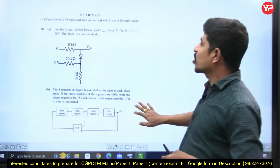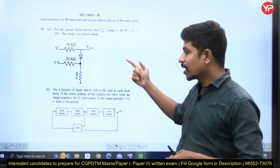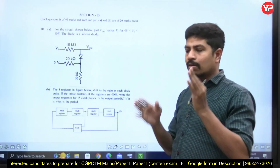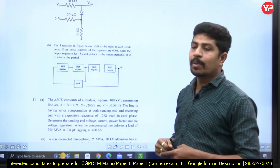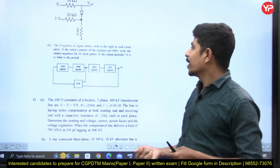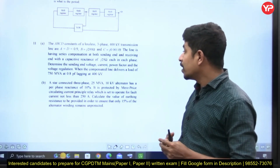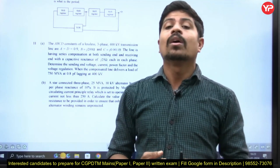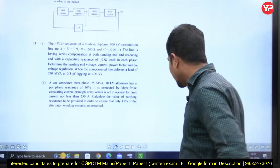In Section D, Question 10A is from analog electronics or EDC. For electrical engineering B.Tech, these come under one subject. Question 10B is from digital electronics — shift registers and XOR gates. Question 11A and 11B are both from power systems. Overall, control systems, power systems, and analog electronics have good weightage in the previous paper. However, it doesn't necessarily mean the upcoming exam will have the same weightage — prepare these subjects thoroughly nonetheless.